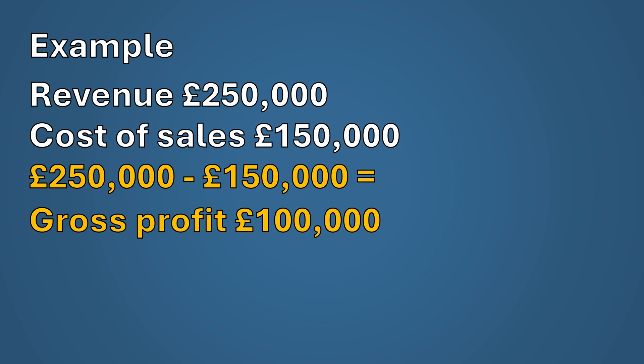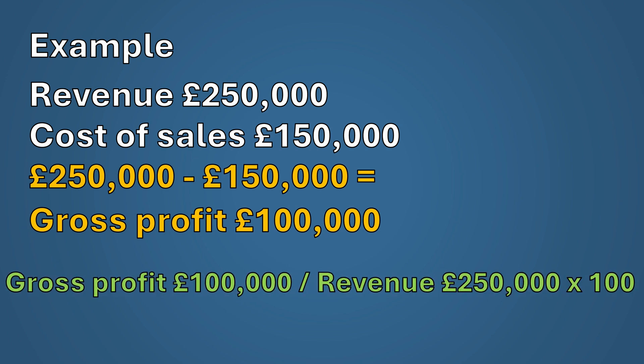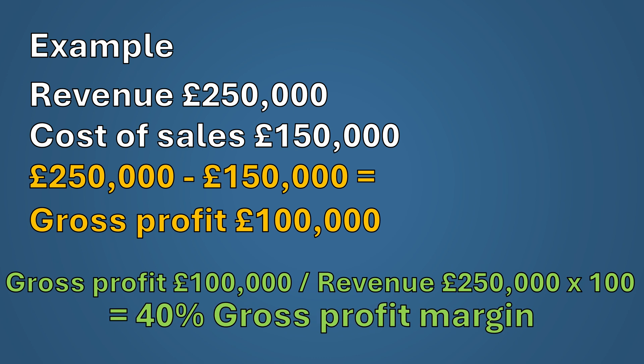Now apply the formula: gross profit of £100,000 divided by revenue of £250,000 times 100 equals 40%. This means that the company keeps 40% in gross profit for every one pound of sales earned, and this is before accounting for other expenses such as rent, wages, or even taxes.